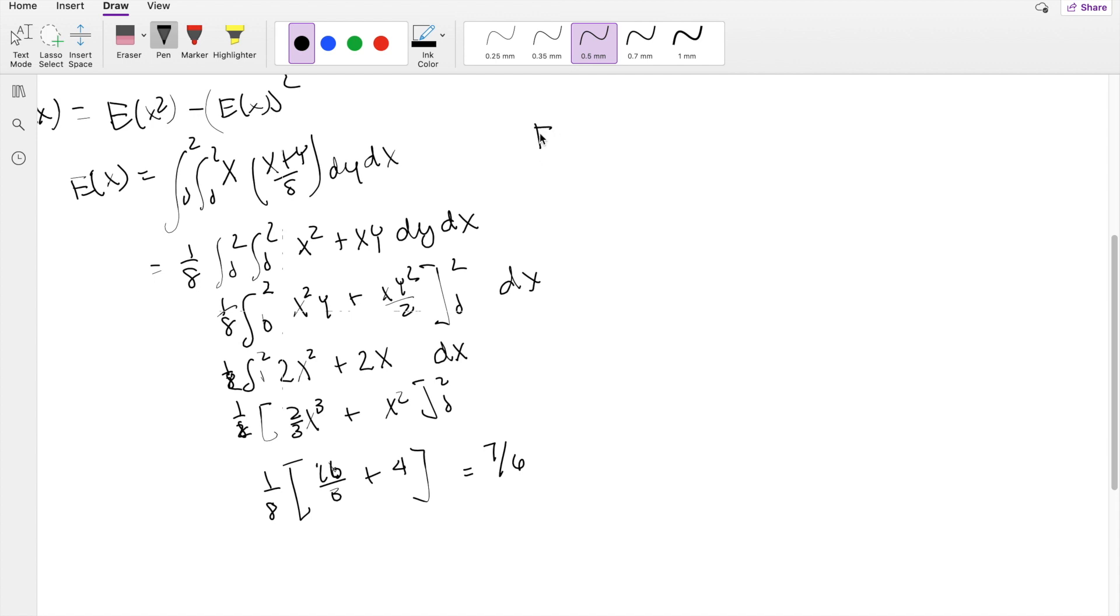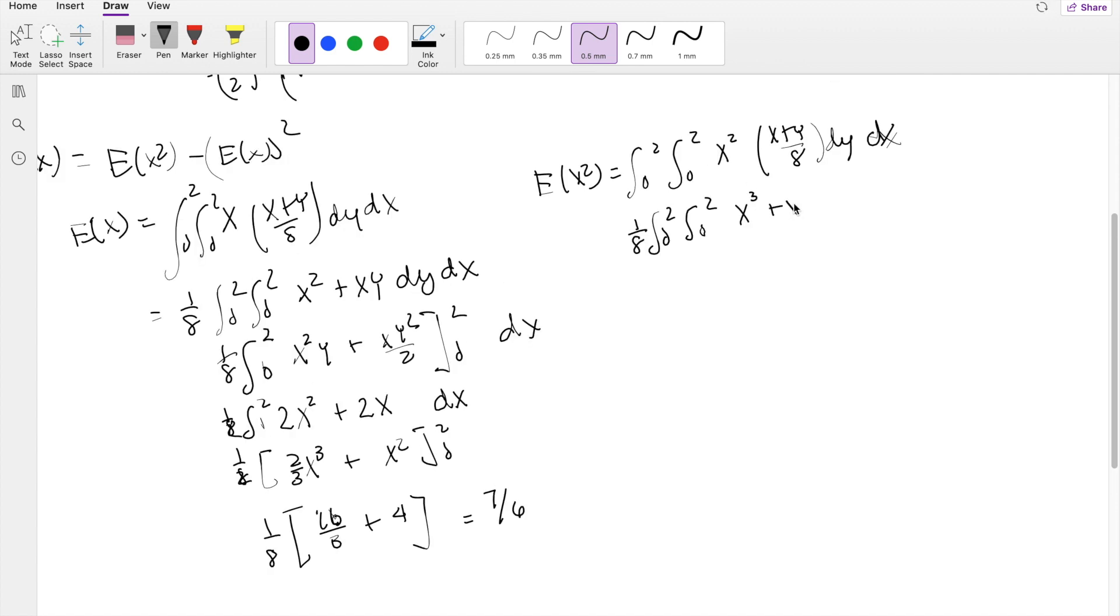For the second moment, E of x squared, same idea. Instead of x, you get x squared: x squared times x plus y over 8 dy dx. Throwing that 1/8 outside, you're integrating x cubed plus x squared y dy dx. When integrating in terms of dy, x squared is constant, so it becomes y plus x squared y squared divided by 2, from 0 to 2 for y.